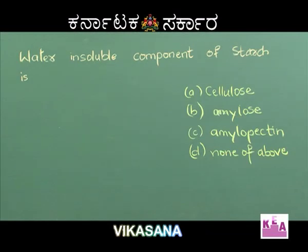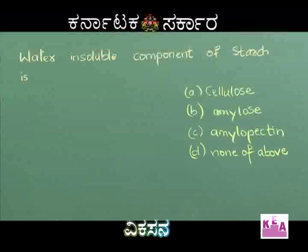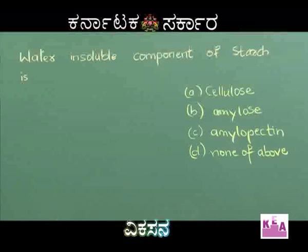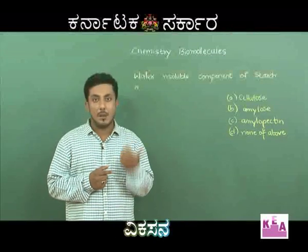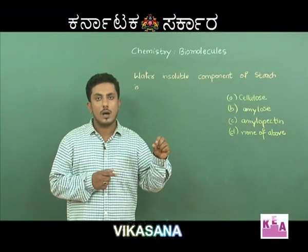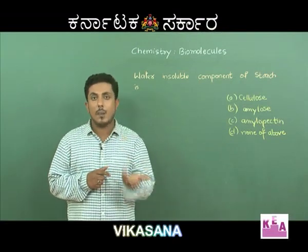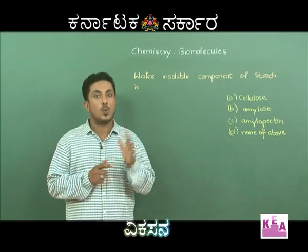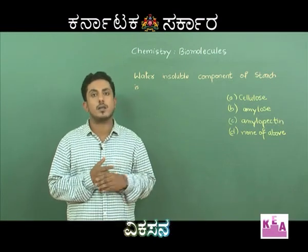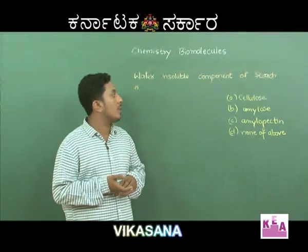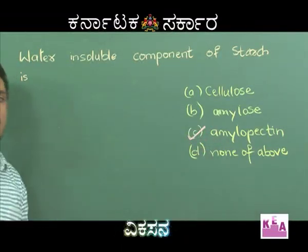Water-insoluble component of starch: Option A Cellulose, Option B Amylose, Option C Amylopectin, Option D None of the above. Starch is a polymer of alpha-D-glucose. Amylopectin is a branched polymer. Amylose is the water-soluble component, and amylopectin is the water-insoluble component. Hence, Option C is the right answer.